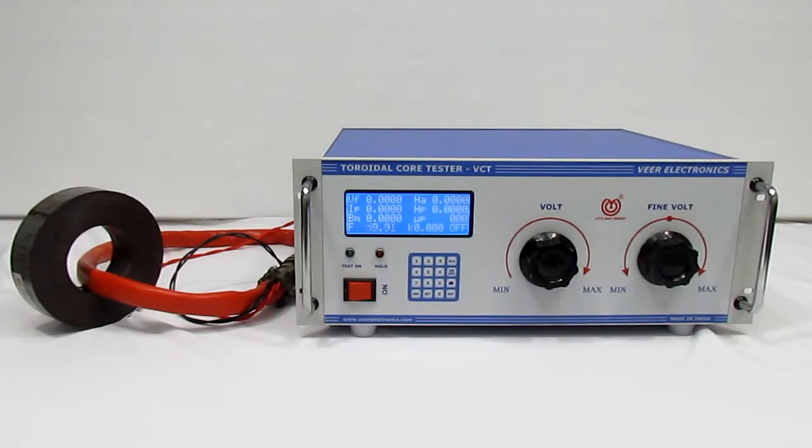This is Veer Electronics Make Toroidal Core Tester, model VCT01. It is useful to test circular and rectangular toroidal cores of different grades. It complies with American Standard ASTM A927.